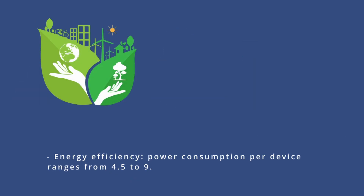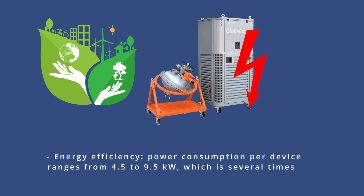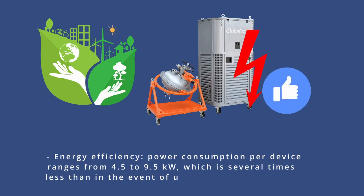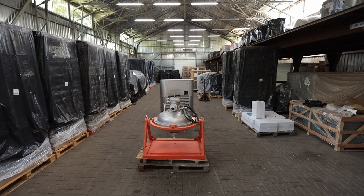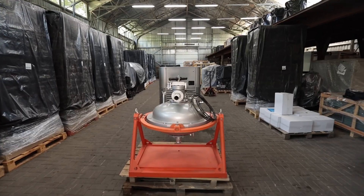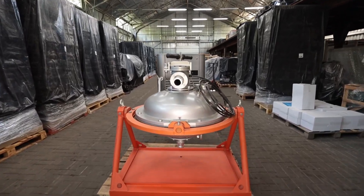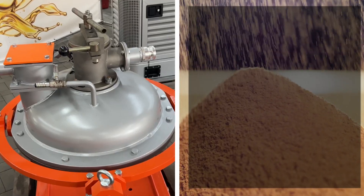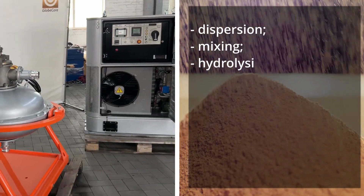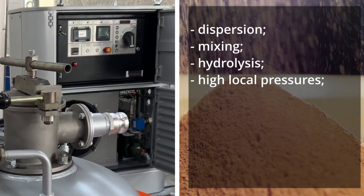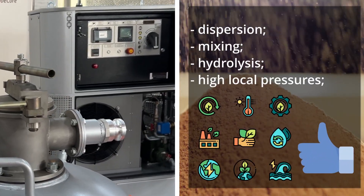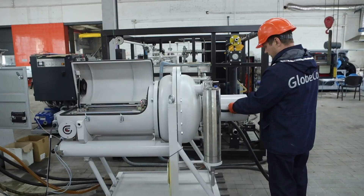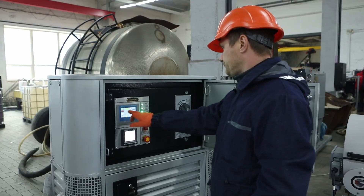Energy efficiency is a key benefit — power consumption per device ranges from 4.5 to 9.5 kilowatts, which is several times less than conventional equipment. AVS is a versatile solution for conventional and new pectin production technologies, ensuring simultaneous dispersion, mixing, and chemical reaction intensification, thus providing considerable energy savings.